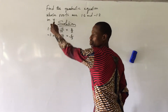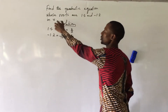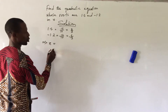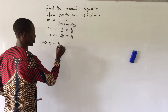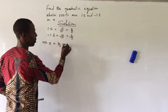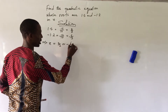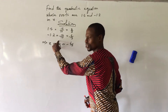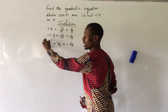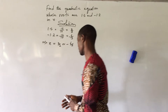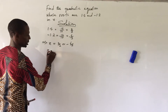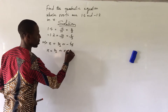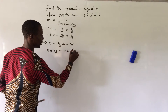The question says we should find the quadratic equation in x, so we equate these two solutions to x. This means x equals 3 over 2, or x equals minus 6 over 5.